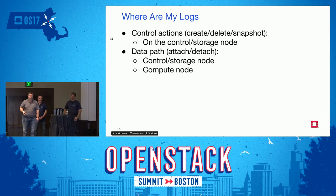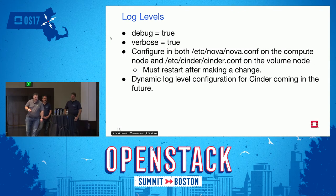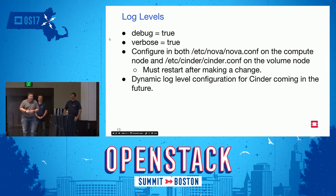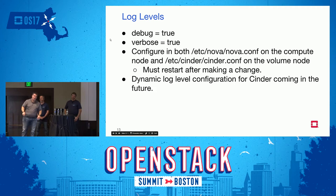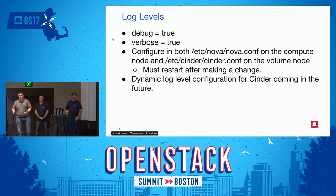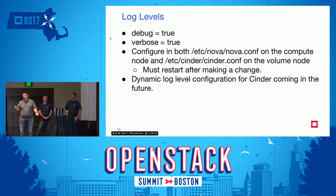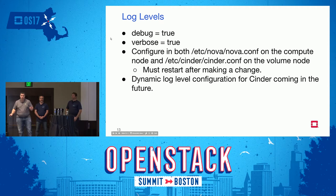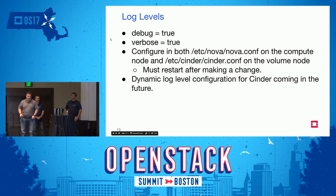Log levels matter. Debugging is easier if you have debug set to true and verbose set to true so you get all available information out of the system. This is set in either nova.conf or cinder.conf. For Cinder, do it on the control node or wherever your volume service is running. For Nova, it needs to be on the compute node where you're seeing the attachment problem, because logs are not centralized in default configurations. After adding those lines, restart and recreate your failure.